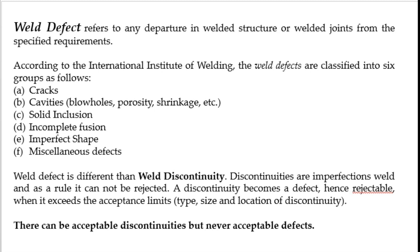There is a distinction needed between defect and discontinuity. Discontinuities are imperfections in the weld and as a rule cannot be outright rejected. If a defect is found it must be rejected, but a discontinuity cannot be straight away rejected. If the discontinuity exceeds acceptable limits — for example, if its size is beyond a particular limit — then we call it a defect, and defects are always to be rejected.